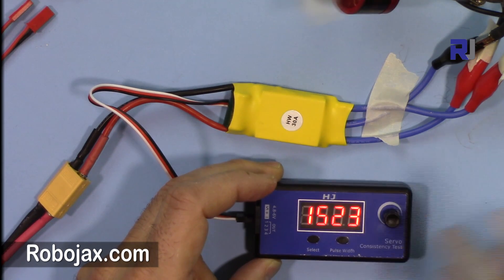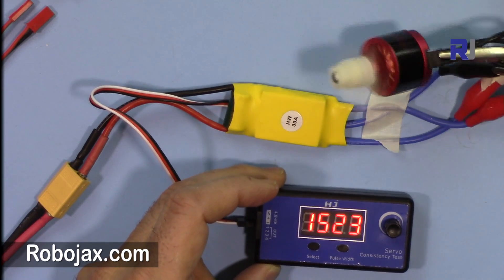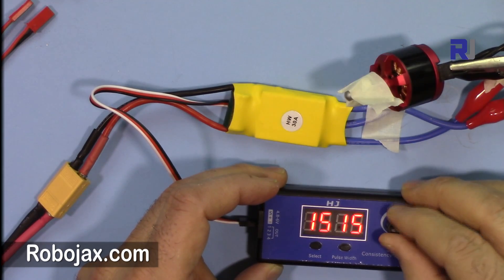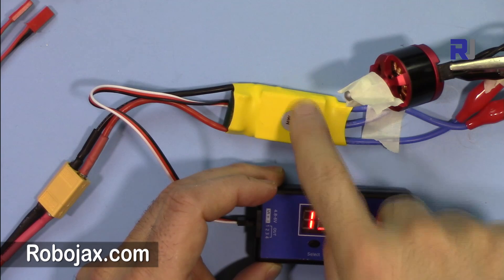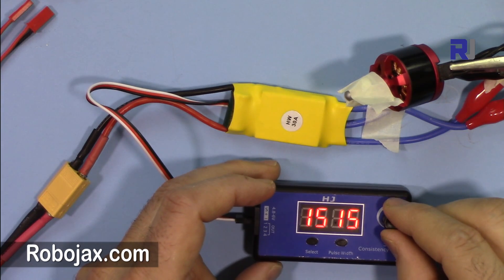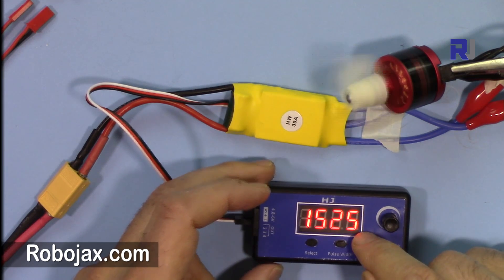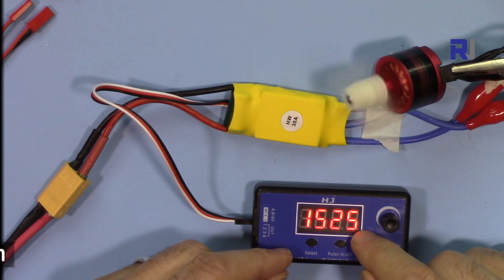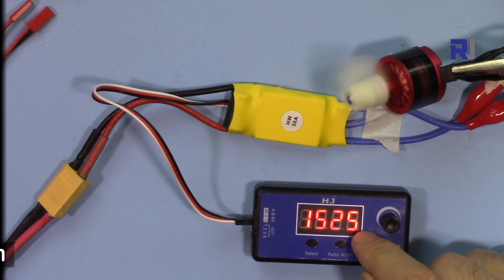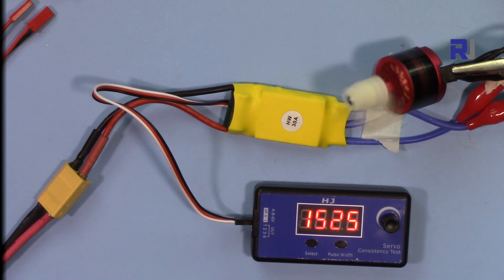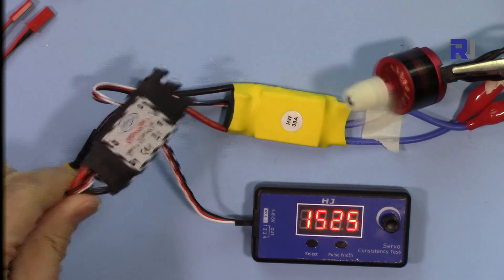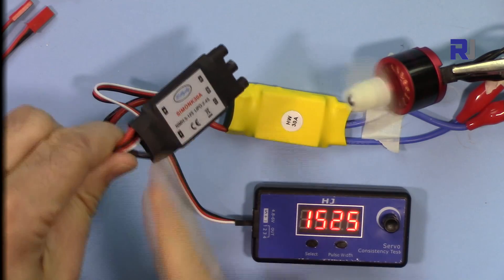As you can see here, with this different ESC the motor rotates at around 526 or 520, while when I was using the other ESC it started running with this one at 1600.